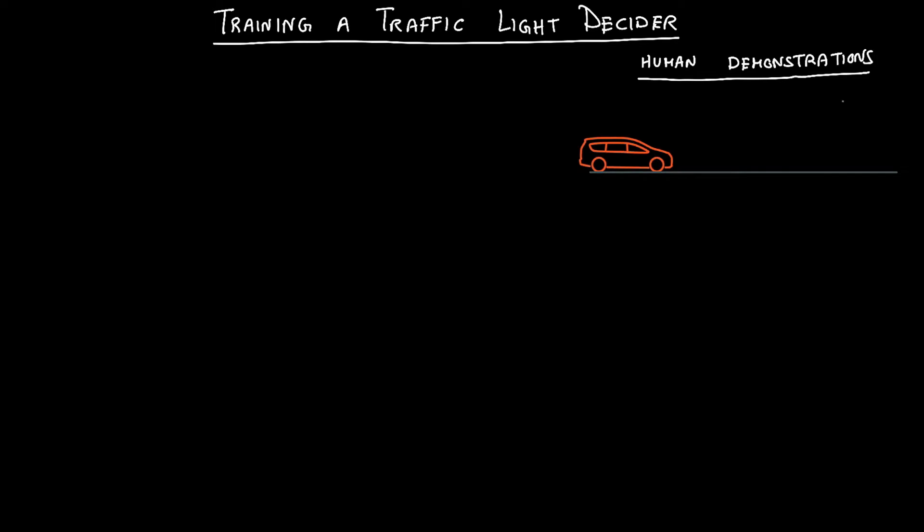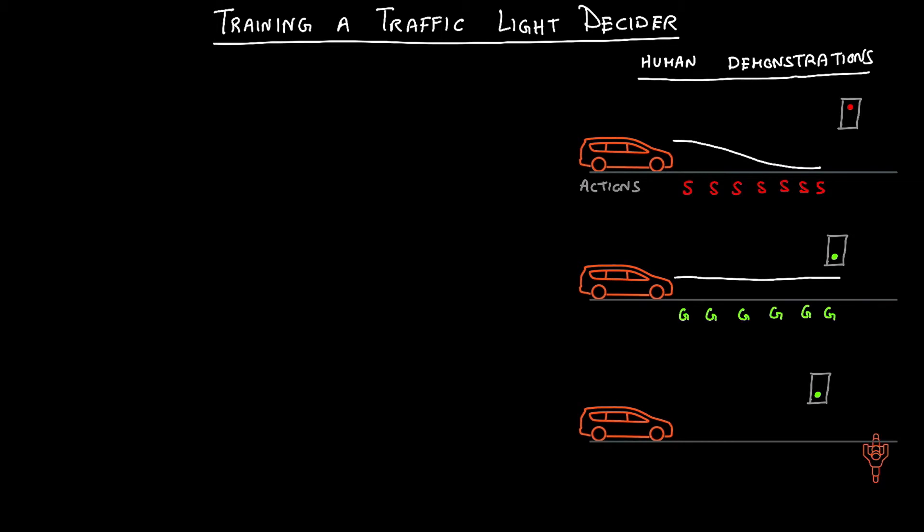So, we go out and collect data of human driving. As expected, humans come to a stop at a red light. So, the action sequence will look like stop, stop, stop, and so on. At a green light, they continue going. So, the action sequence looks like go, go, go. But, sometimes, there may be a cyclist in the scene that's crossing. And then, even though there's a green light, the humans will come to a stop. So, initially, they were going. But, upon seeing the cyclist, they come to a full stop.